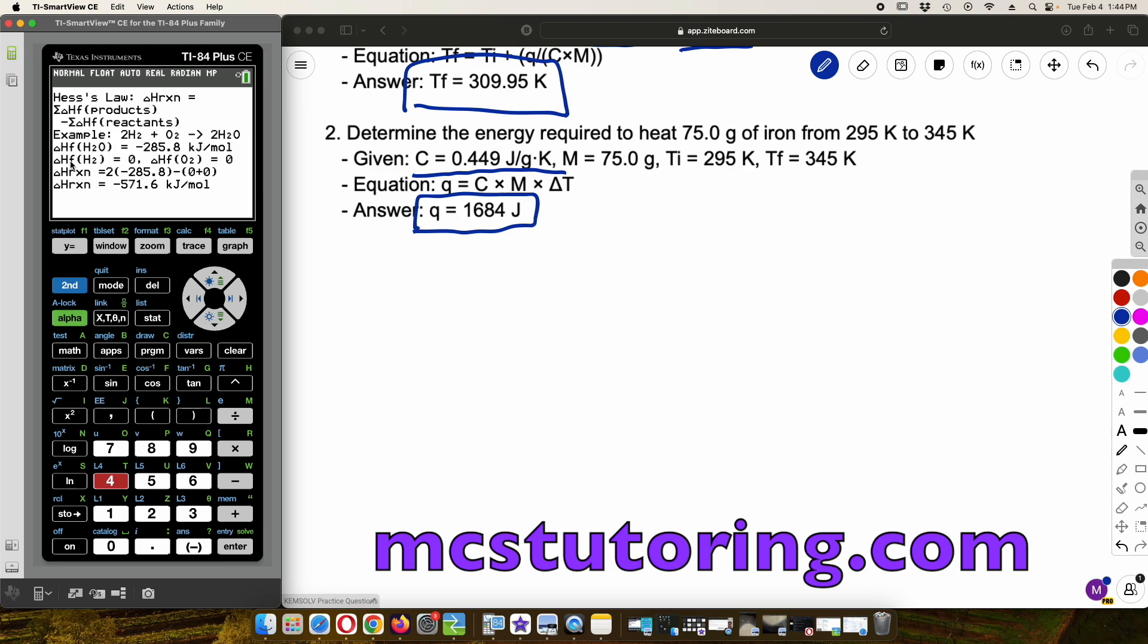So, for example, if we do 2H2 plus O2 yields 2H2O, the delta HF of H2O is negative 285.8 kilojoules per mole. Sorry. Kilojoules. Delta HF of the H2 is zero. Delta HF of O2 is zero. So, the change heat of reaction. Now, we're putting a two here because of this coefficient in front of the H2 for the balanced equation. Okay. Times that subtracting the heat delta minus the sum of the delta HF of the reactants, which is zero.